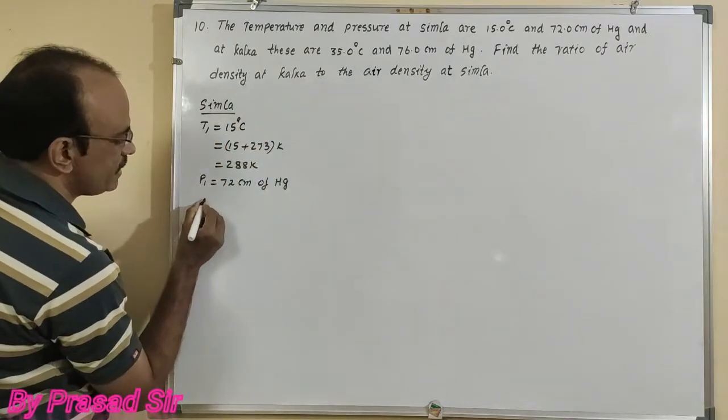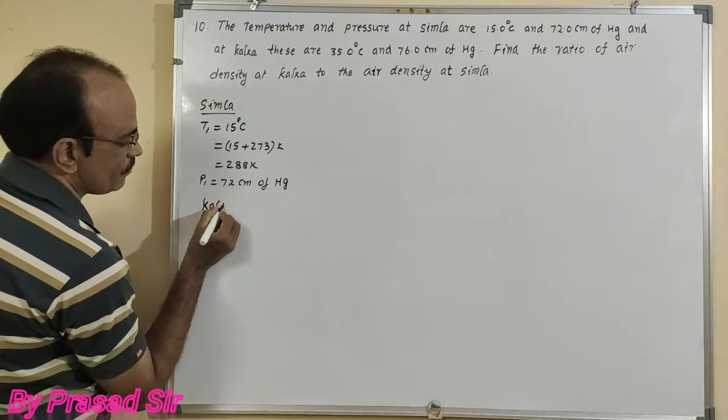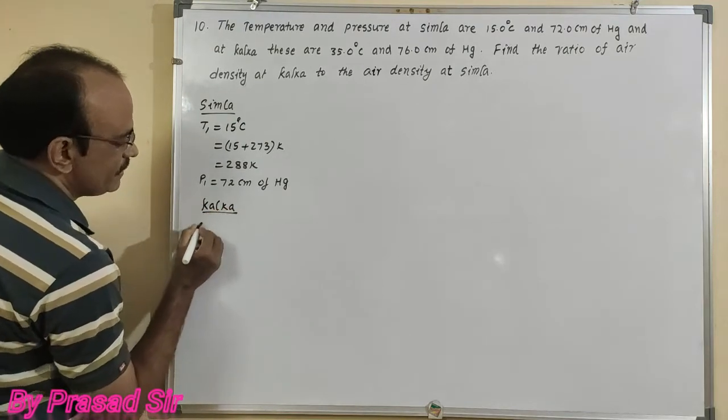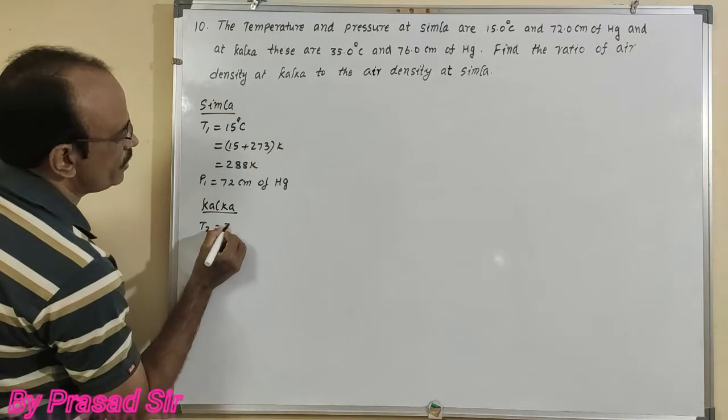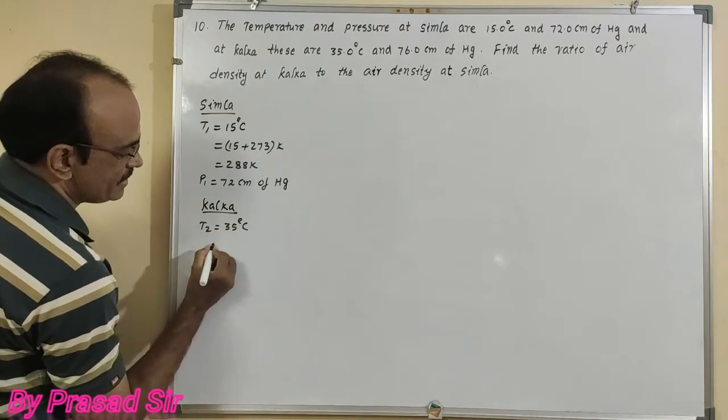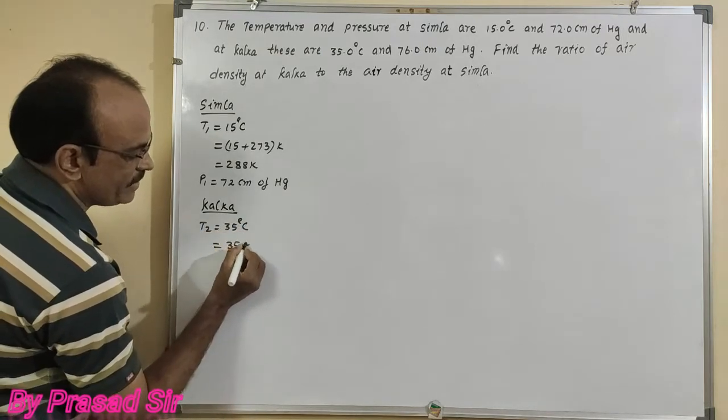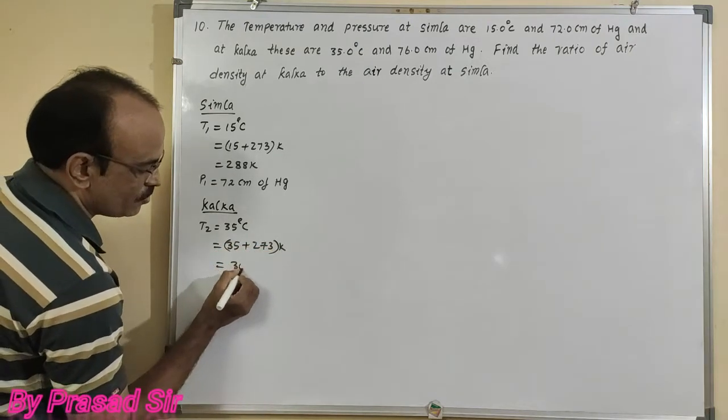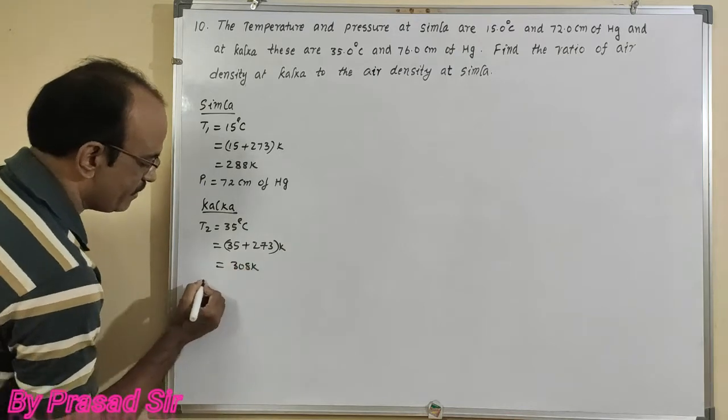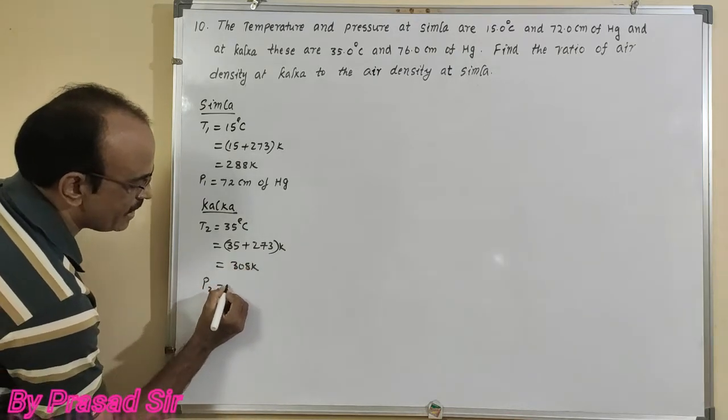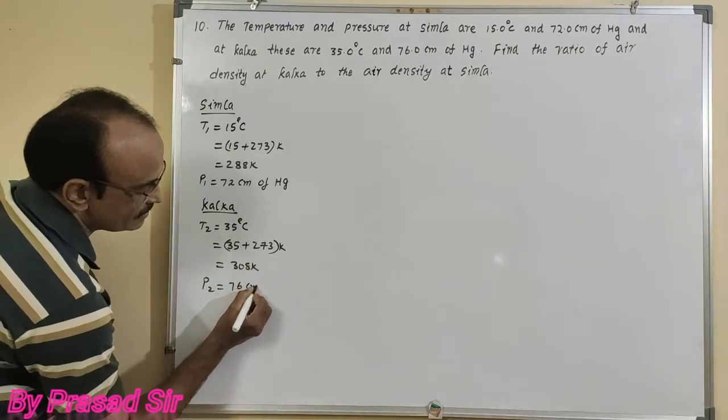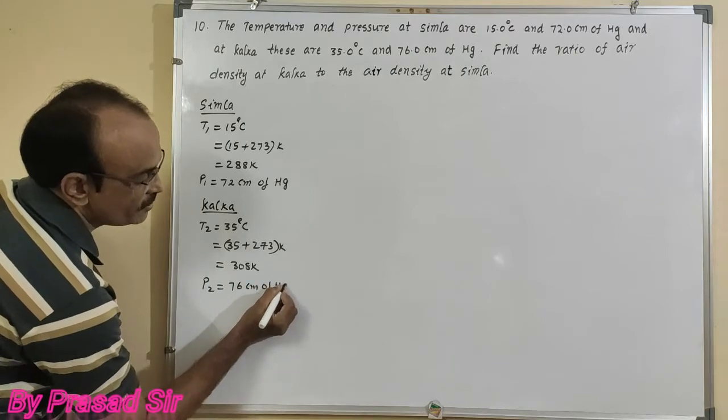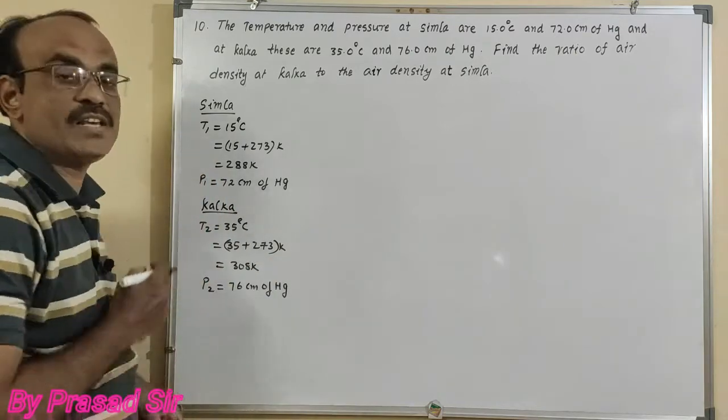At Calca, the temperature T2 equals 35 degrees centigrade. Converting to Kelvin: 35 plus 273 equals 308 Kelvin. The pressure is 76 centimeters of mercury. These are the given values.